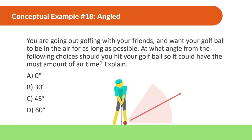Next question: you're going out golfing with your friends and want your golf ball to be in the air for as long as possible. At what angle from the following choices should you hit your golf ball so it could have the most amount of airtime? The answer is going to be 60 degrees, and the reason for that is the larger the angle is, the more velocity there is in the y direction.